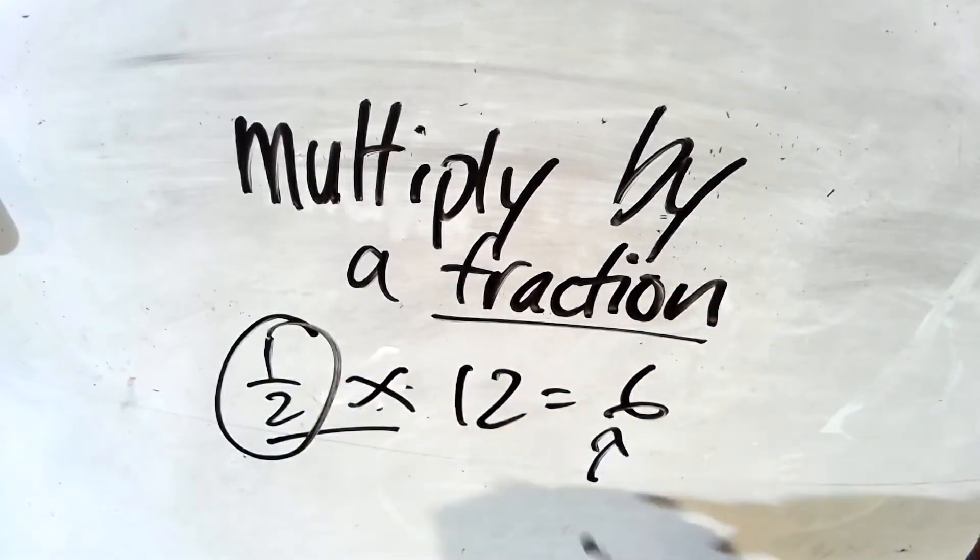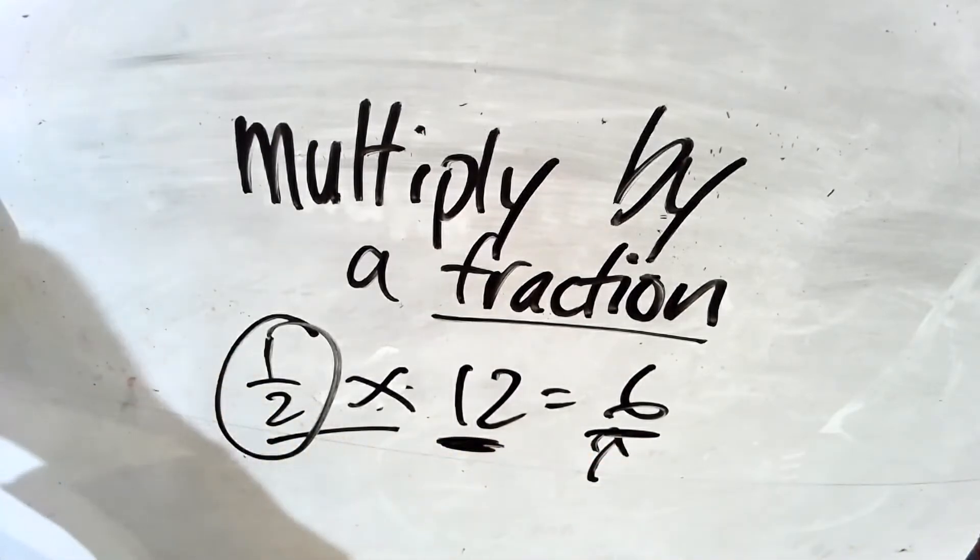One half times 12 equals 6. When you multiply by a fraction, the product becomes smaller. Multiply by 12 and your answer is now 6. 6 is less than 12. When you multiply by a fraction, remember your product is less than the whole number. Your answer gets smaller.